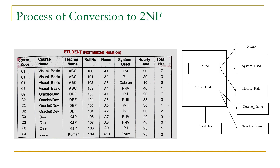There is one more dependence in this dataset: between system used and hourly rate. For every system we charge a fixed rate — P1 always gives 20, P2 always gives 30. So hourly rate is functionally dependent on system used. This is shown in the FD diagram. To summarize: course name and teacher name are dependent on course code; name, system used, and hourly rate are dependent on roll number; total R is dependent on the combination of course code and roll number; and hourly rate is also functionally dependent on system used.